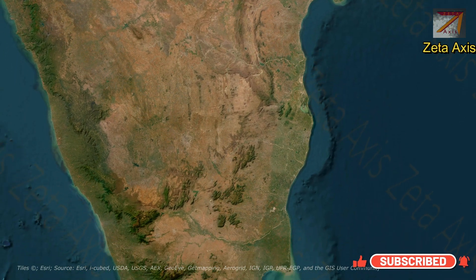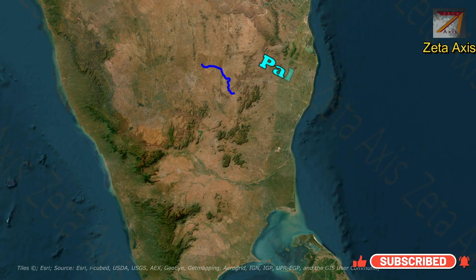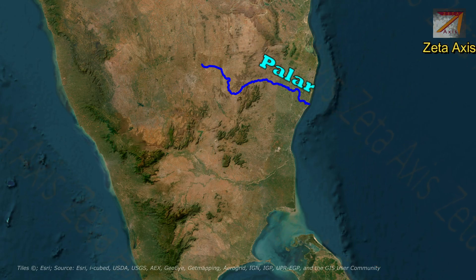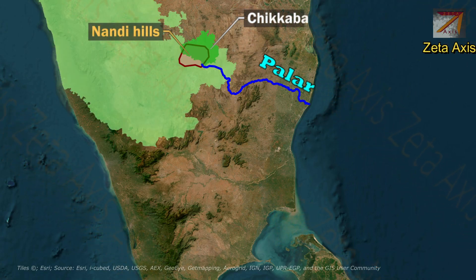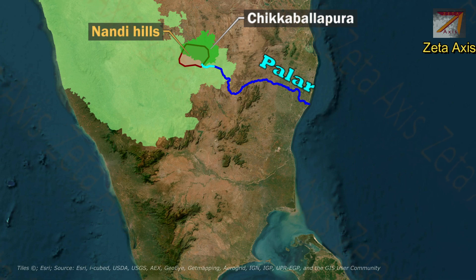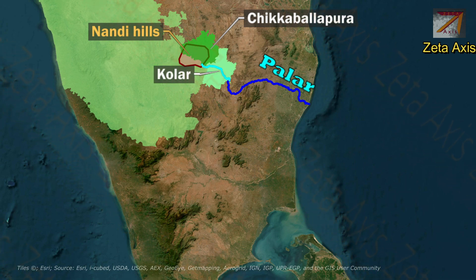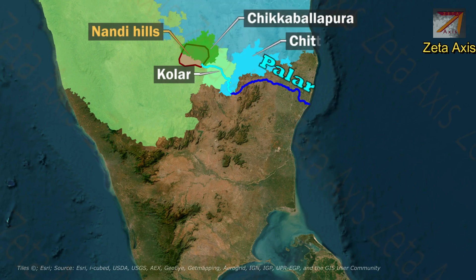Now let's discuss about the Pallar river. The Pallar river also rises in Nandi Hills in Chikabalapur district of Karnataka state. The Pallar river flows through Kolar district of Karnataka and then it flows into Chittor district of Andhra Pradesh.